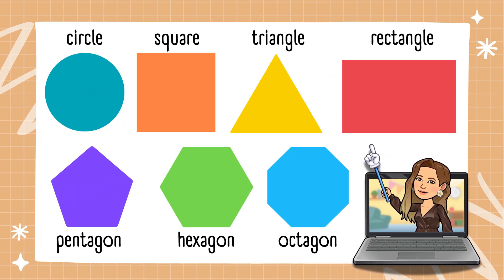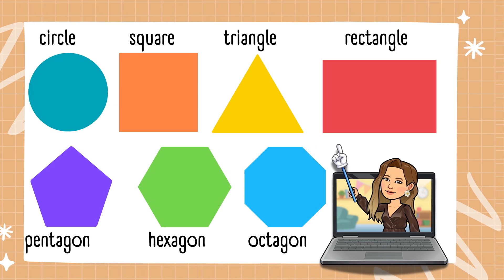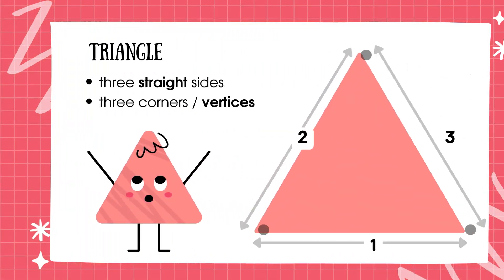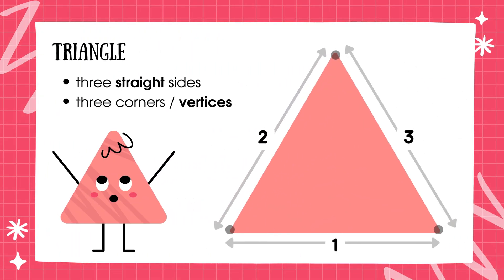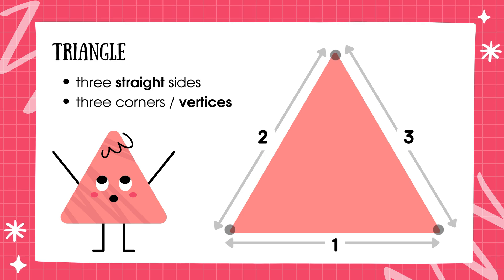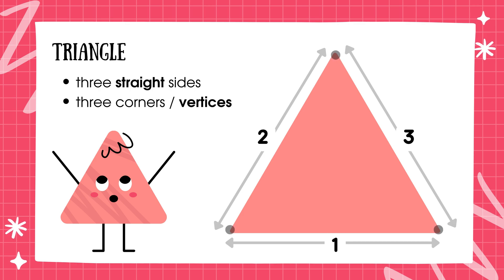Here are some common 2D shapes. This is a triangle. It has three straight sides and three corners, which we call vertices.